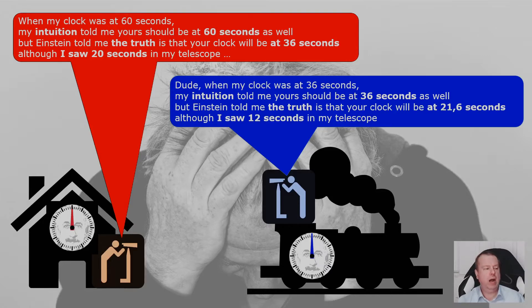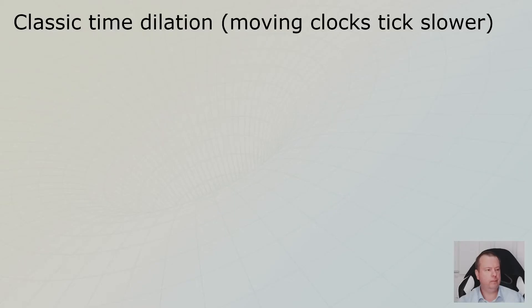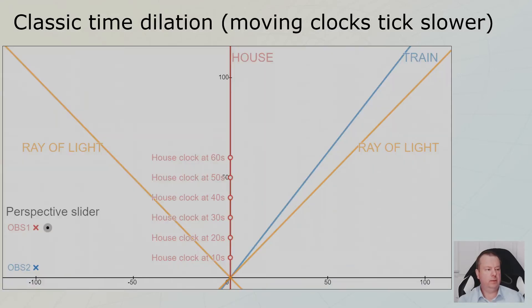And now I want to show you how this works using the space-time diagram. First start with classic time dilation, which explains why moving clocks tick slower from the perspective of the non-moving observer. This is the space-time diagram. We have the house. We are now in the perspective of the house. And we have this train going at 80% of the speed of light. And our clock just ticks each second. And I introduced a perspective slider. I built this online as well. We will go online. You can do this for yourself.